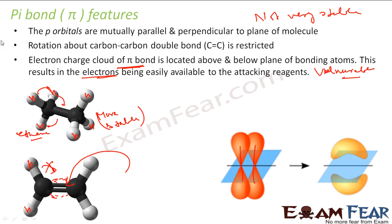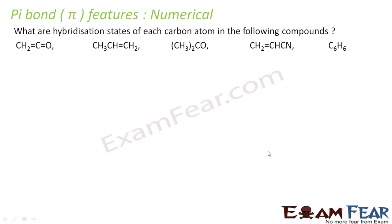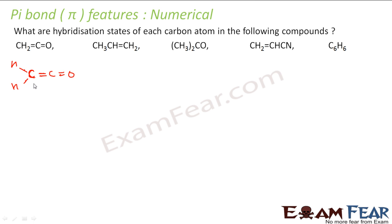So there are three different features of pi bonds. Now the question asks: what are the hybridization states of each of the carbon atoms in the following compounds? The first is CS2CO. Let me draw this. This carbon has 1, 2, 3 bonds, so it is Sp2.